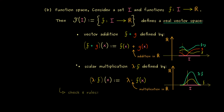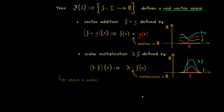Moreover, if we consider functions that are complex valued, we can make the same construction and get a complex vector space. Then it's also important that we scale with complex numbers, but otherwise all the definitions look the same. Then we are ready for the next example.